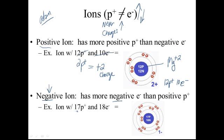For a negative ion example: imagine 17 protons — that's chlorine, it'll always have 17 protons. But the number of electrons goes up to 18. If I count all the electrons around the outside, it equals 18. So 17 protons cancel with 17 electrons, leaving me with one extra electron. Chlorine ends up with a -1 charge when comparing protons and electrons.